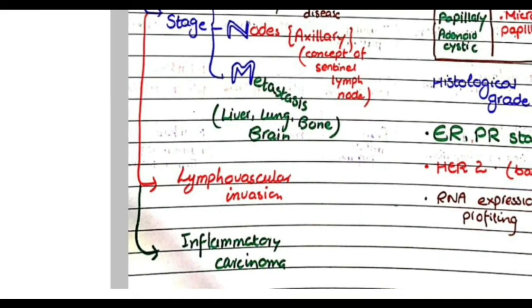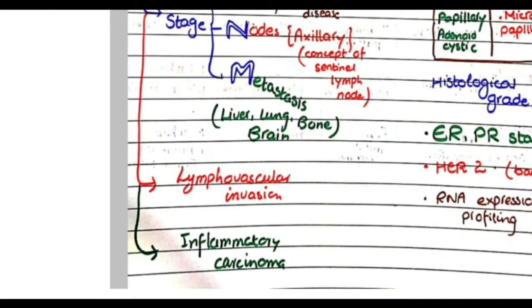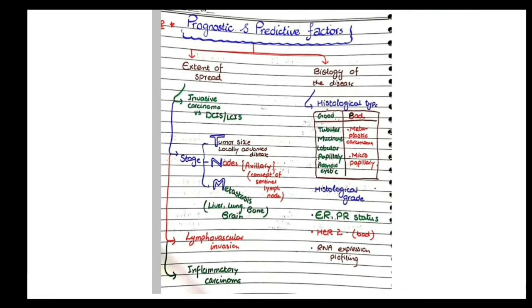For inflammatory carcinoma, it is called inflammatory carcinoma when the tumor cells invade the dermal lymphatics, and this blockage of dermal lymphatics causes the breast to appear swollen and red. If inflammatory carcinoma is present, it has the worst prognosis among all breast cancers.